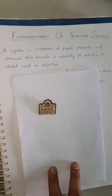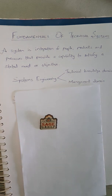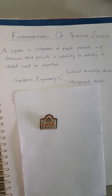Next comes the systems engineering design. Systems engineering basically consists of two domains. The first one is the technical knowledge domain in which the systems engineer operates, and the second one is the management domain in which systems engineer management mainly works. We can define systems engineering as a logical sequence of activities and decisions that transforms an operational need into a description of system performance parameters and a preferred system configuration.